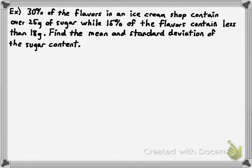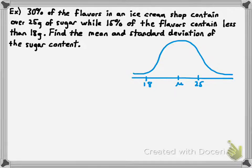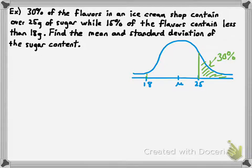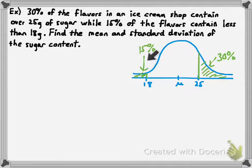Let's find the mean and the standard deviation of the sugar content. I'm going to start off by drawing a couple of pictures. In the first picture, I'll write the actual data where we don't know the mean, but we do have these two numbers — 25 grams and 18 grams — to work with. We know that 30% of the data values contain more than 25 grams, shown here on the diagram. And we know that 15% of the flavors contain less than 18 grams — 15%, not 18%.